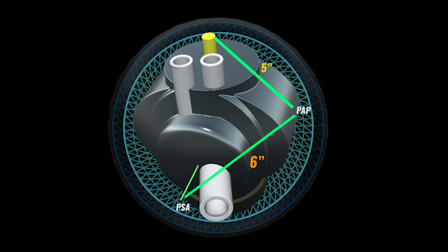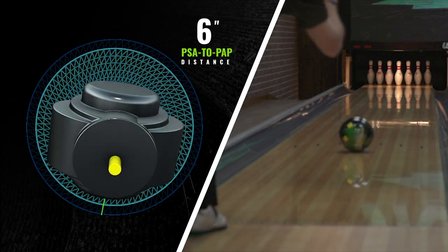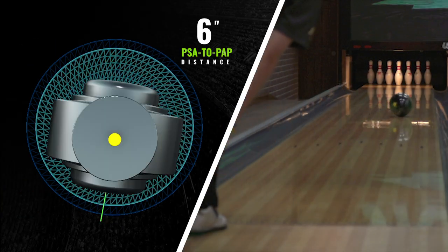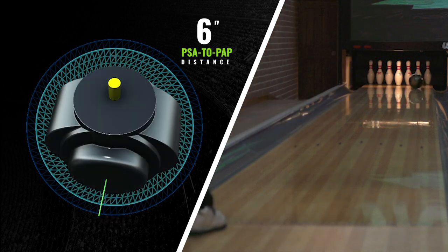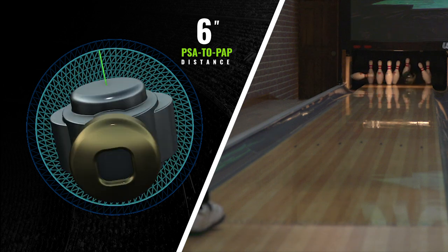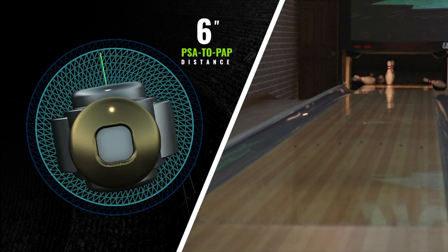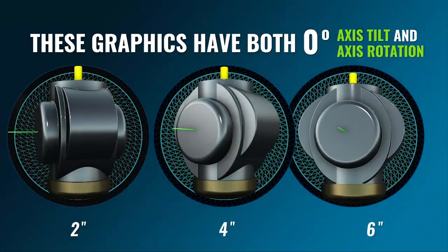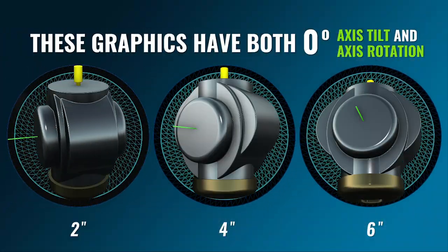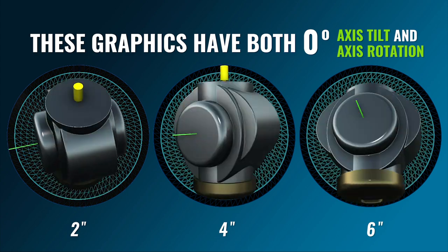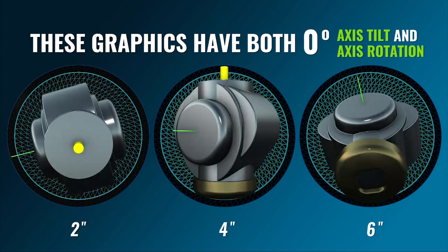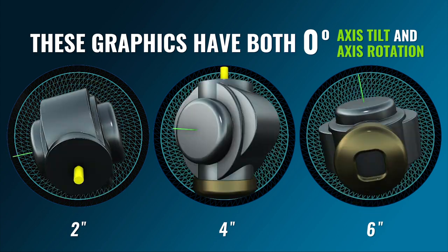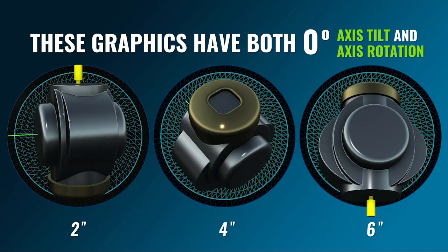Finally, let's position the PSA with a six-inch PSA to PAP distance and send it into rotation. This positions the PSA in a nearly stable orientation at the moment of release. The PSA is not going to have to migrate very far to achieve a stable position. This will result in less overall flare and a much straighter path throughout the entire lane. Keep in mind these graphics have both zero degrees of axis tilt and axis rotation, and a six and three-quarter inch pin to PAP distance is shown. We are just using this as a basic example to see the angle at which the core is oriented at the moment of release with different PSA to PAP distances.